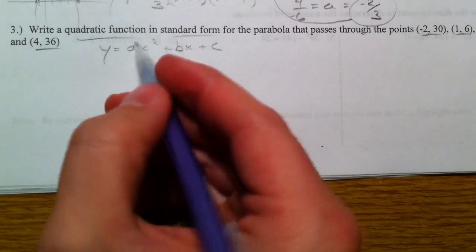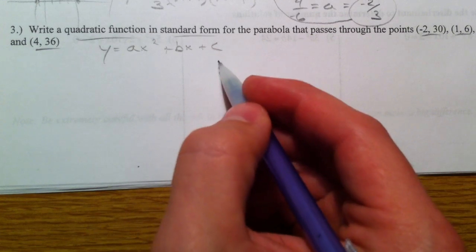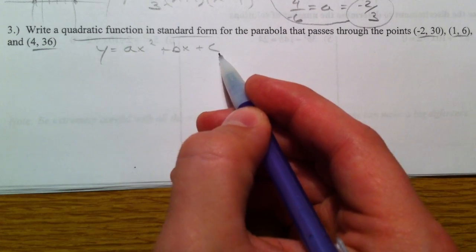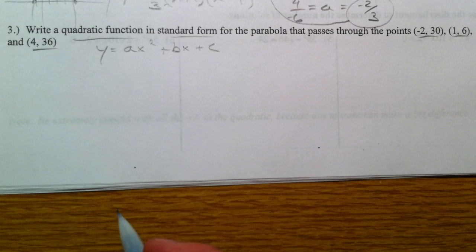A determines whether it goes up or down. C determines the y-intercept. And so if you're given the y-intercept, you know what c is. So if you knew that x equals 0, you would know what c is, but we don't.